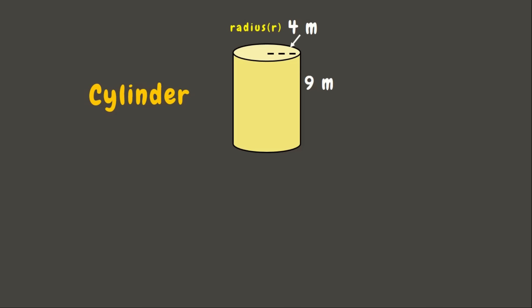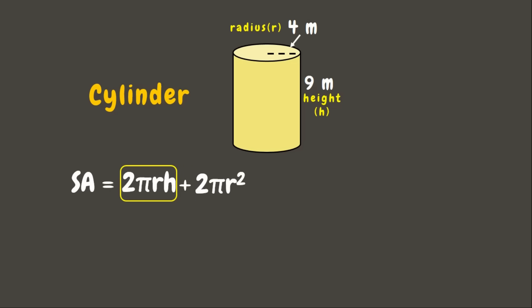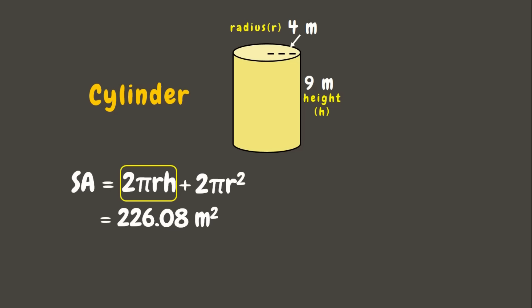Our cylinder has a radius of 4 meters and a height of 9 meters. To get the surface area of a cylinder, we use the formula: 2πrh plus 2πr squared. First, let's calculate 2πrh: that will be 2 times pi (3.14) times the radius (4 meters) times the height (9 meters). Solving this gives 226.08 square meters.